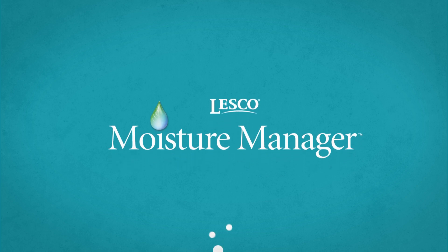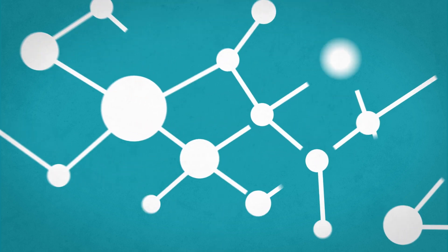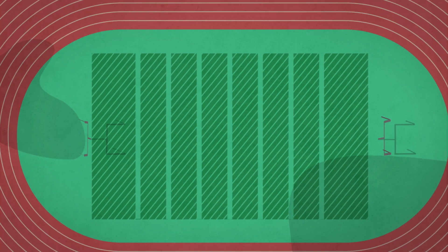Lesko Moisture Manager, available at SiteOne Landscape Supply, uses advanced soil moisture management technology to reduce the water needs of lawns, gardens, golf courses, and any other large areas of turf or plantings.